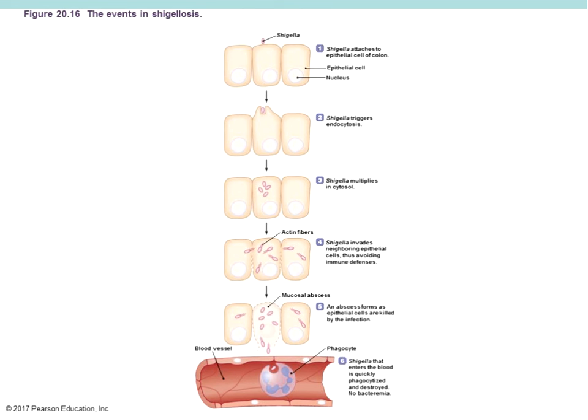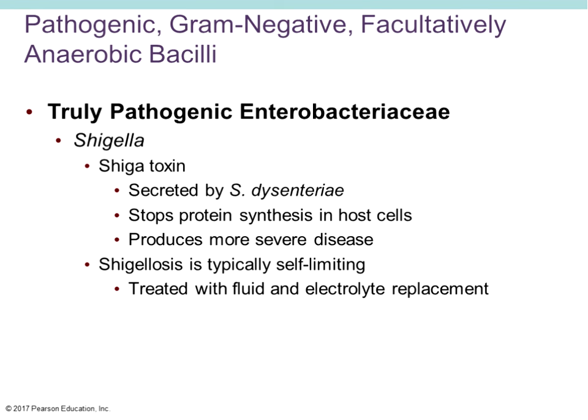Shigella dysenteriae secretes an endotoxin called the Shiga toxin — the same one we discussed with E. coli O157:H7. It stops protein synthesis in the host cell and can be fatal. The Shiga toxin causes very dramatic, pronounced bouts of dysentery, bloody stools, and severe diarrhea. Stopping protein synthesis in the host cell is the key mechanism to remember about the Shiga toxin, relevant to both Shigella and that specific strain of E. coli.